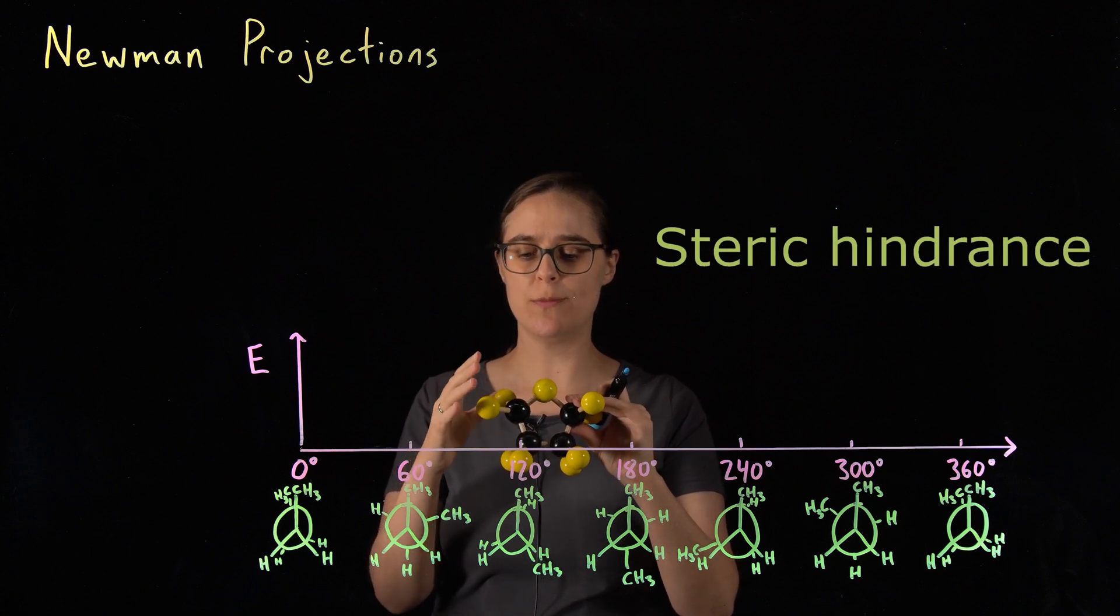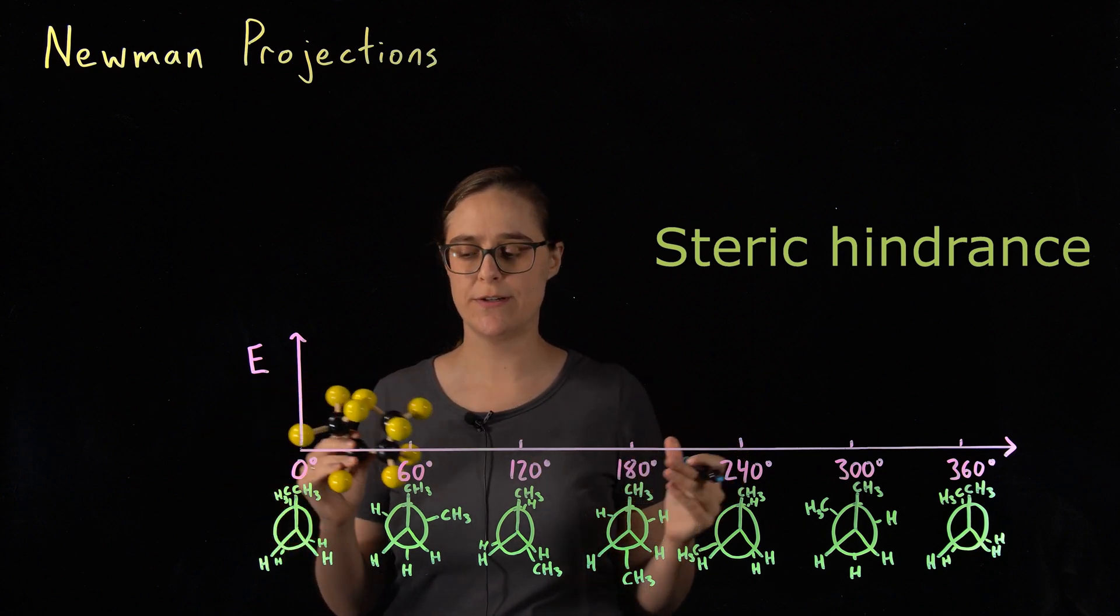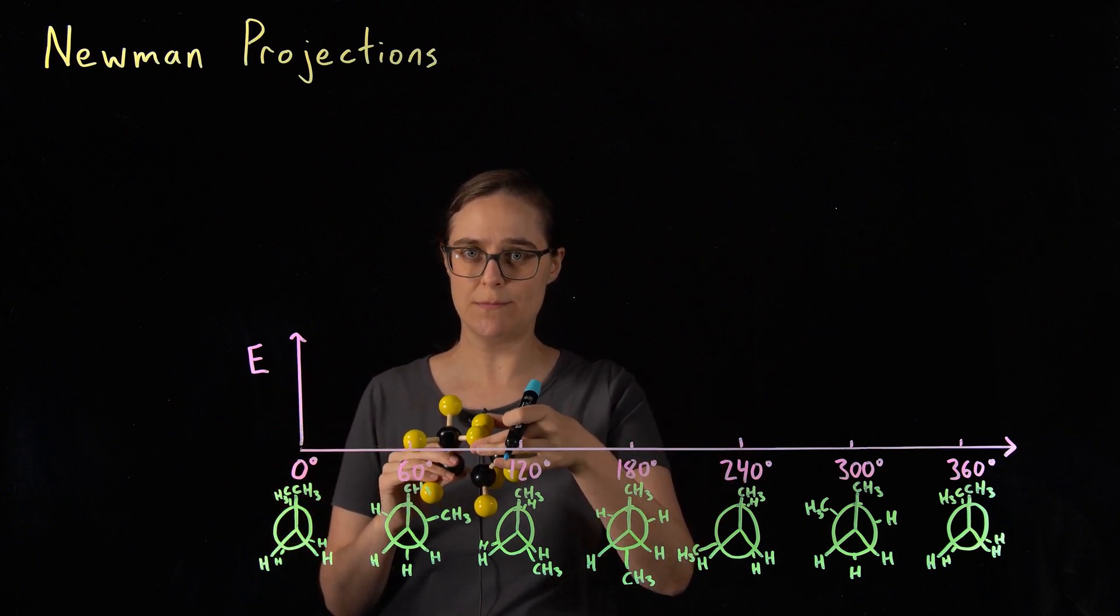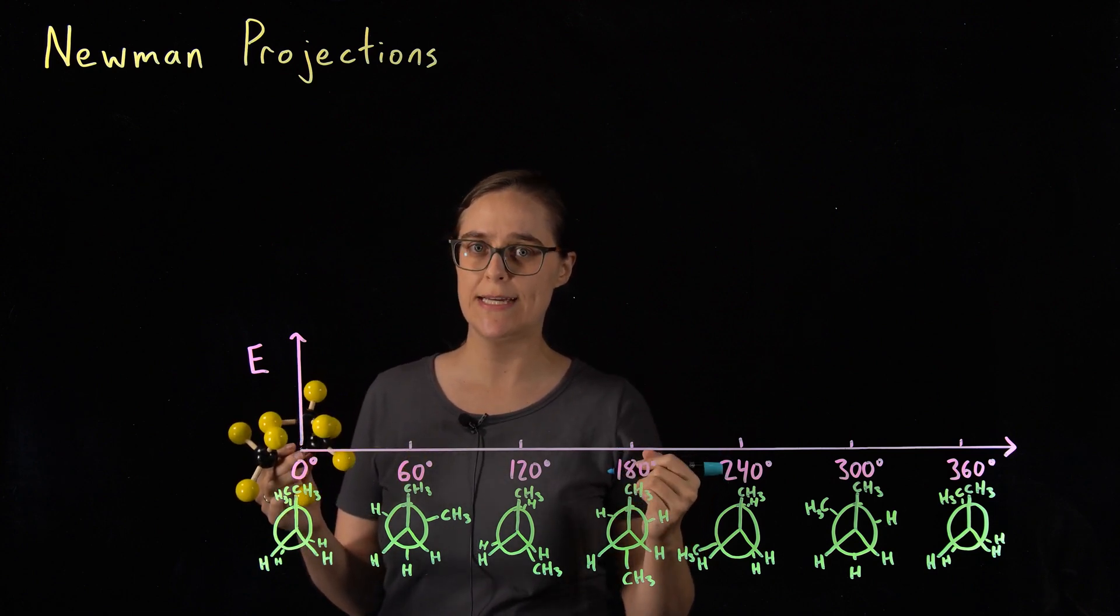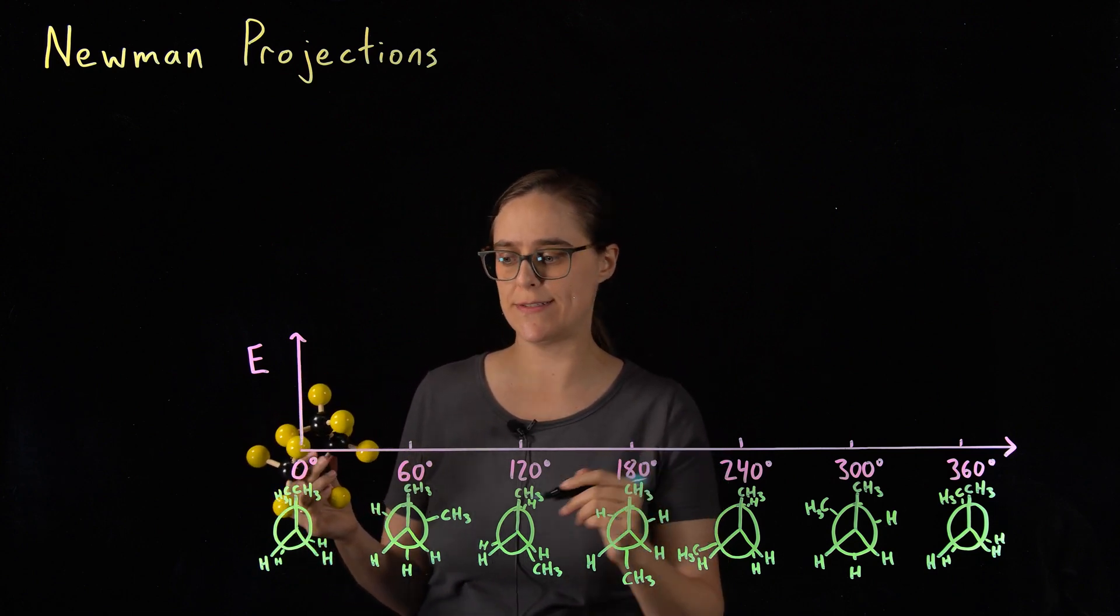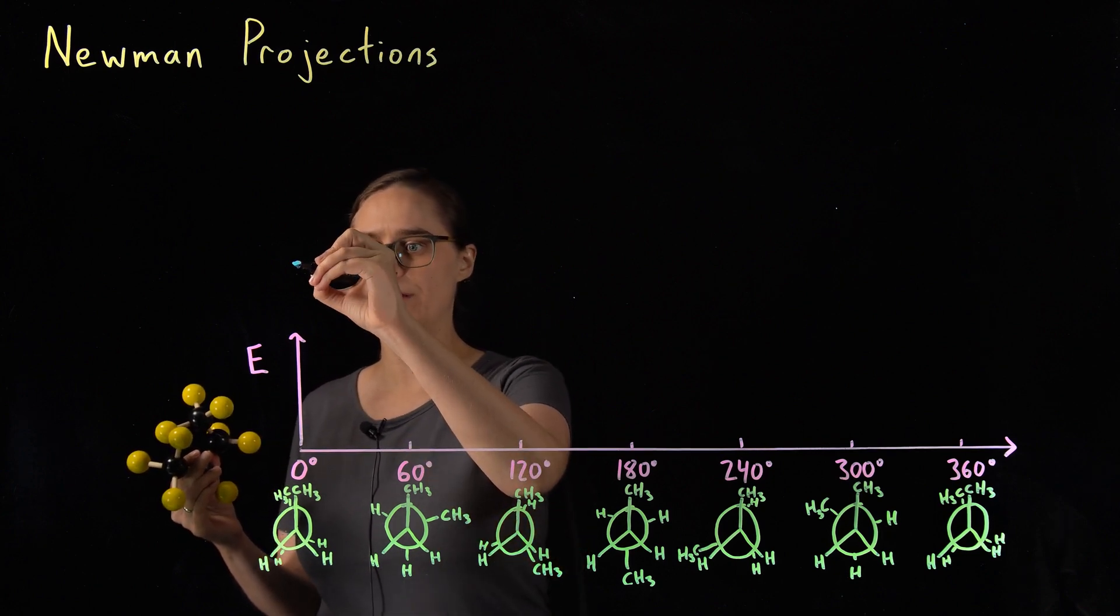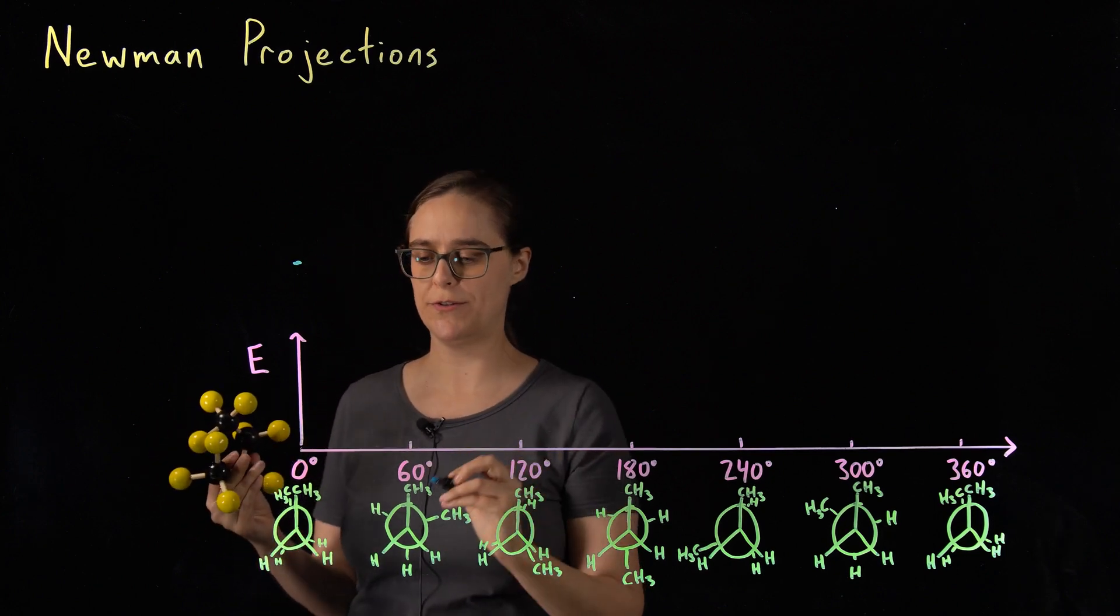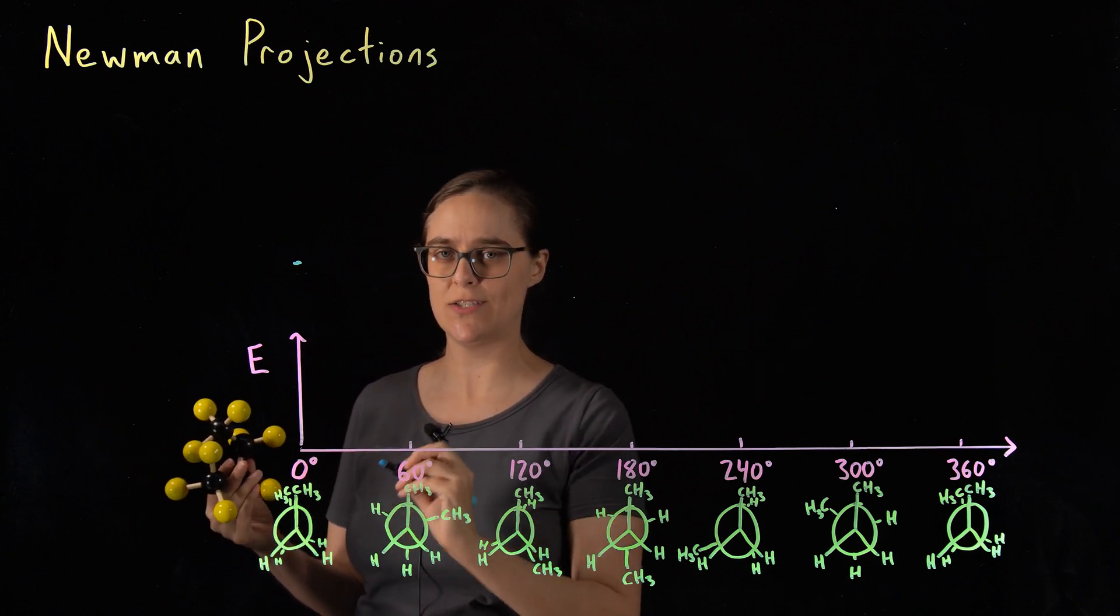The outermost part of atoms is where the electrons orbit. Those electrons repulse each other. The closer these atoms are to each other, the less stable the conformation is, and the higher the potential energy is. So this zero degree dihedral angle is going to be the highest potential energy. This particular conformation is called syn, s-y-n.